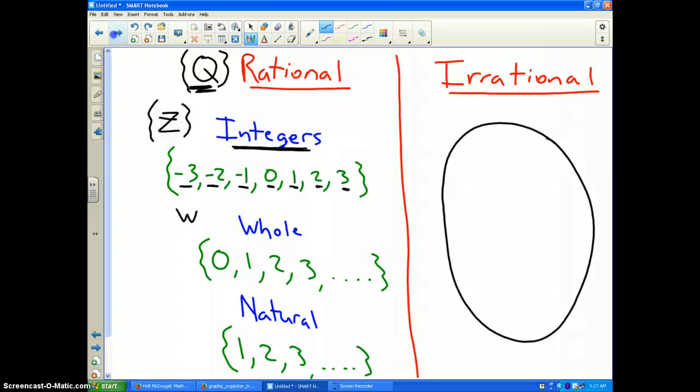Whole numbers are represented by the letter W. Whole numbers, I think of whole numbers as how many whole pizzas could you go out and order with your friends. Well, you could order zero whole pizzas, you could order one whole pizza, two whole pizzas, three whole pizzas, etc. Whole numbers are counting numbers that are not negative.